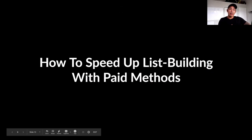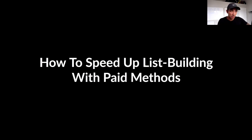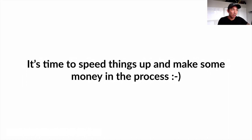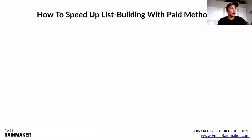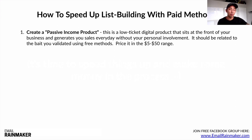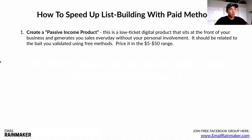Now let's talk about how to speed up list building with paid methods. Once you've validated your bait by getting 50 subscribers, it's time to speed things up and make some money in the process. Step one: create a passive income product — a low-ticket digital product that sits at the front of your business and generates sales every day without your personal involvement. If you can break even on paid ads with this product, that means you're acquiring customers for free. Price it in the $5 to $50 range.